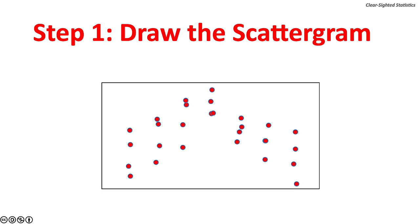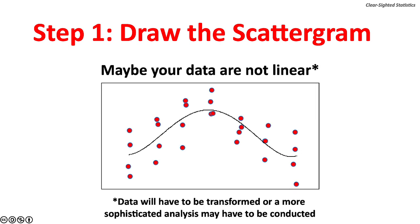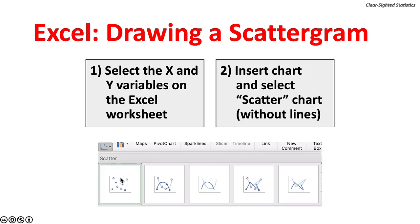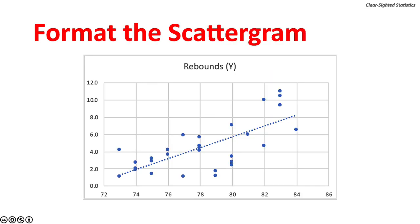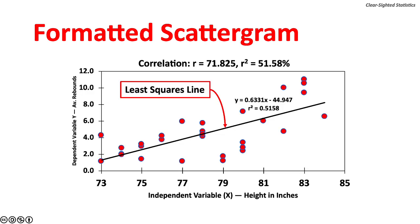To draw the least squares line, first draw a scattergram. If data is not linear, it will have to be transformed or a more sophisticated analysis conducted. In Excel, select the X and Y variables, then use Insert Chart and select a Scatter Chart without lines. Under Add Chart Elements, add a linear trend line — this is the least squares line. Format the scattergram as needed.